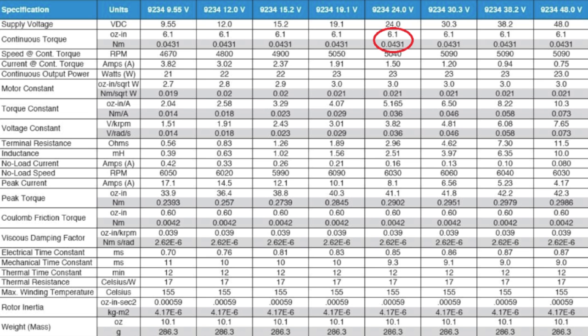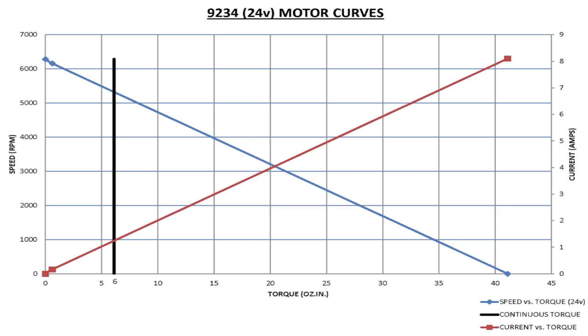The catalog data sheet defines a continuous torque value. You can see this motor is capable of 6.1 ounce inches of continuous torque. Our chart shows the continuous torque of this motor exists along the solid black line.